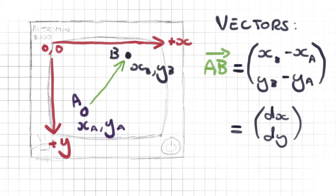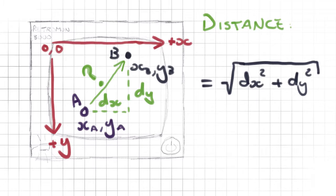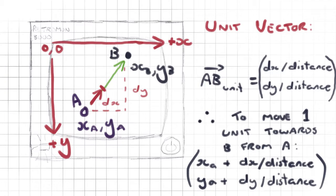So if we generalize that and say we have two positions — position A with values xa and ya, and position B with values xb and yb — the vector is just the difference between those two positions: the difference between the x values and the difference between the y values. Our vector has two values we'll call dx and dy, where D stands for difference. And what does that give us? Well we can very easily get the distance between points A and B by taking dx squared plus dy squared and then taking the square root of that. That's good old Pythagoras.